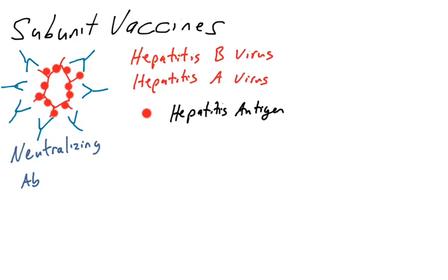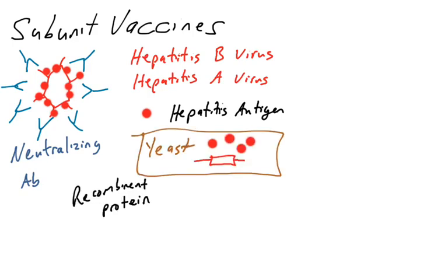Two good examples of subunit vaccines are the hepatitis B vaccine and the hepatitis A vaccine. In these vaccines, individuals are actually not injected with a whole pathogen, but they're injected with a piece of the pathogen, specifically the hepatitis antigen. This is a molecule, it's a protein, found on the surface of the hepatitis virus.